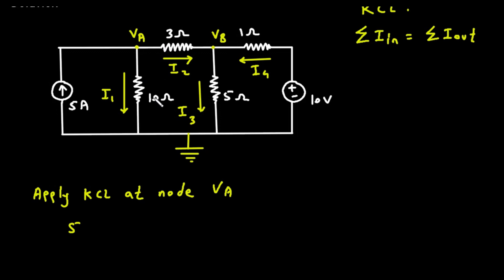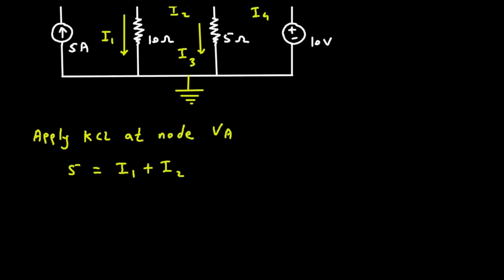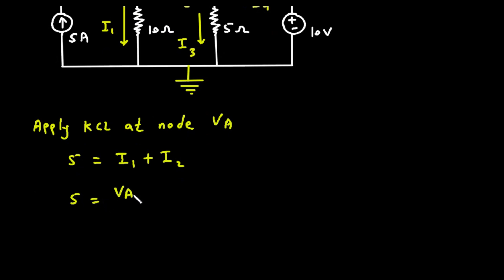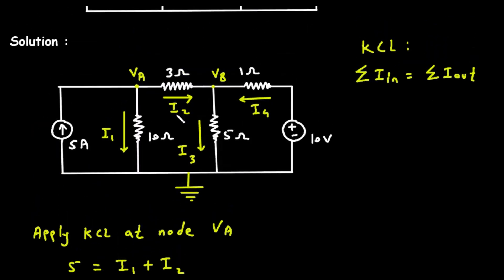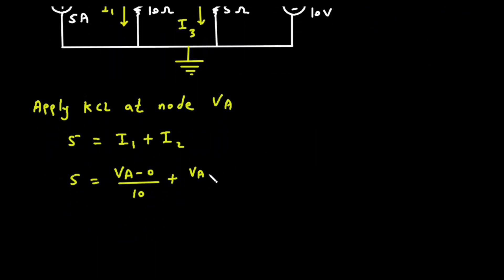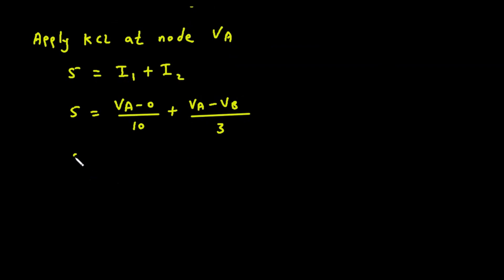There are no more entering currents, so it is equal to the leaving currents I1 plus I2. I1 is VA minus 0 divided by 10, plus I2, which is VA minus VB divided by 3. So: 5 = VA/10 + VA/3 − VB/3.